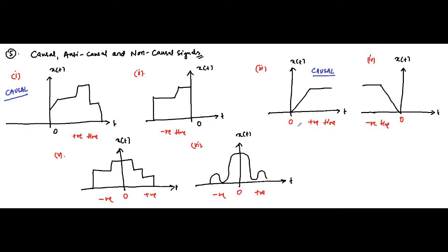Signals which exist only in the negative time duration — the negative time side — and are zero on the positive side, they are anti-causal. They are anti-causal — that is the opposite of causal, the reverse of causal. This one and this one are anti-causal.